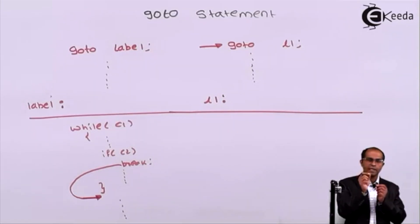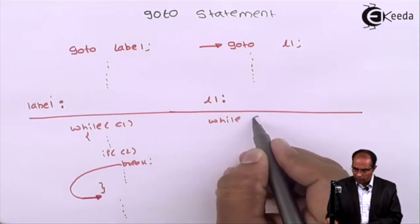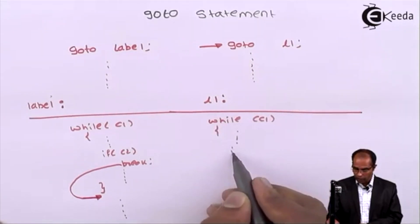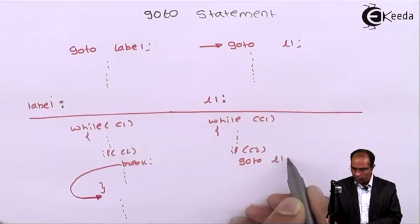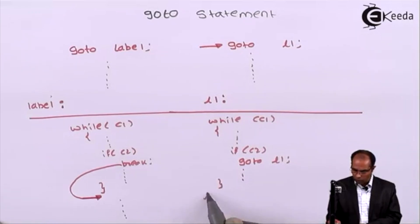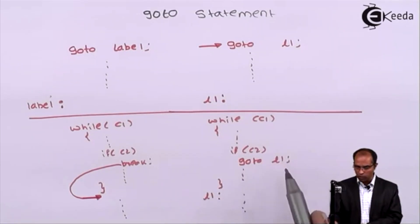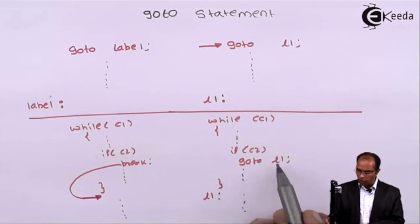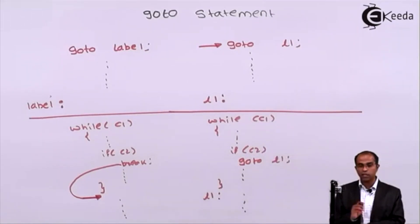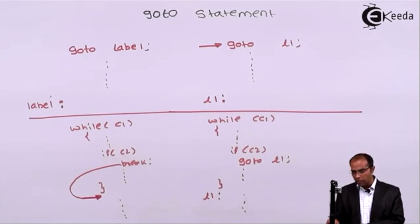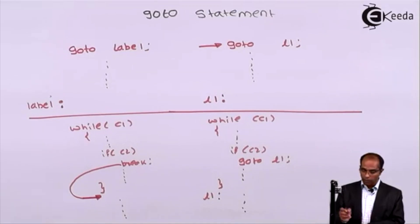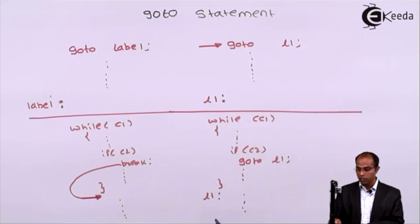Can I use goto as an alternate for break? You can, provided the label is placed exactly outside the loop. For example: while c1 { if c2, goto l1; } and then l1: followed by the remaining code. In this case, goto l1 is a perfect replacement for break, because when you say goto l1, it goes to the place where l1 reappears — which is right outside the loop.